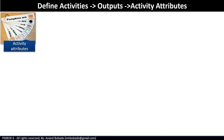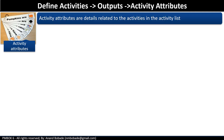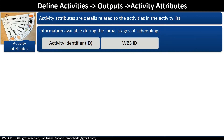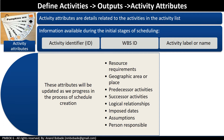Activity attributes are details related to the activities in the activity list. Initially, we have attributes like activity identifier, work breakdown structure ID, and activity label or name. Additional attributes will be updated as we progress in the process of schedule creation — such as resource requirements, geographic area or place, predecessor activities, successor activities, etc.